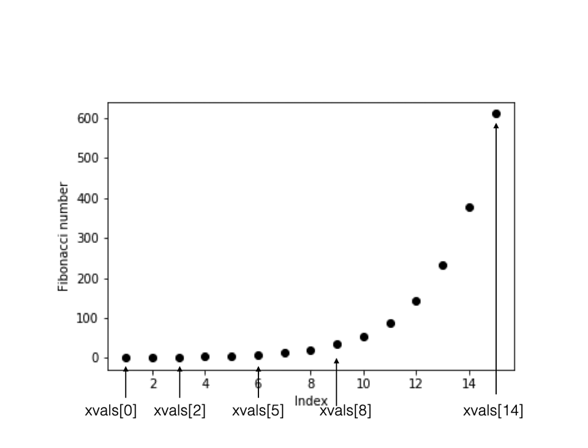The y-coordinates could be similarly stored in an array called yvals. The coordinates of the first point would thus be xvals[0], yvals[0]. The coordinates of the eleventh point are xvals[10], yvals[10]. And the coordinates of the final point are xvals[14], yvals[14].